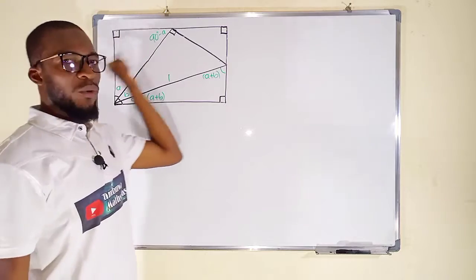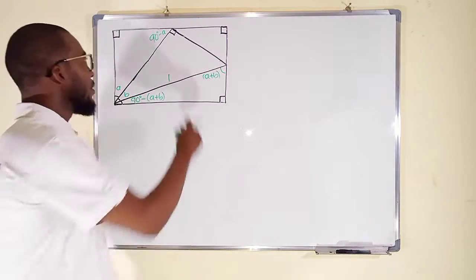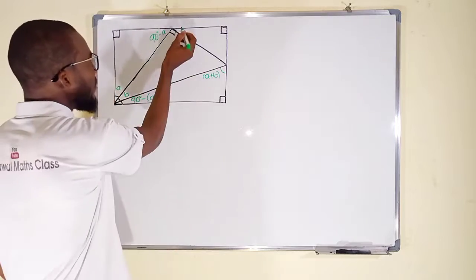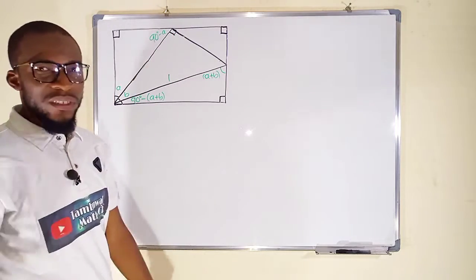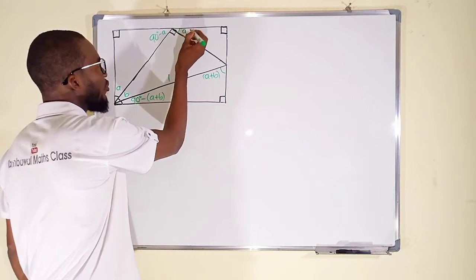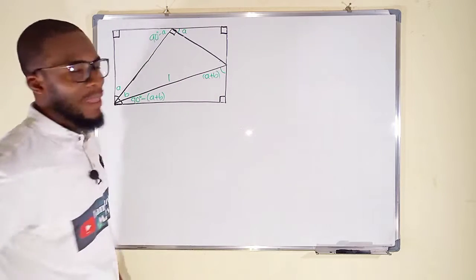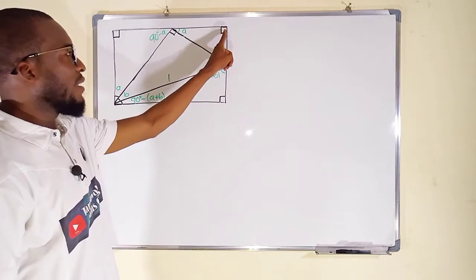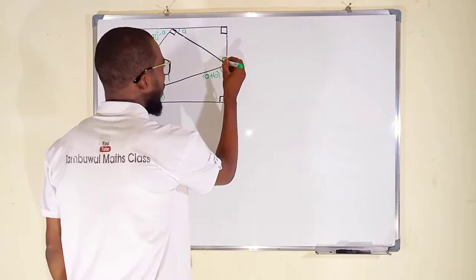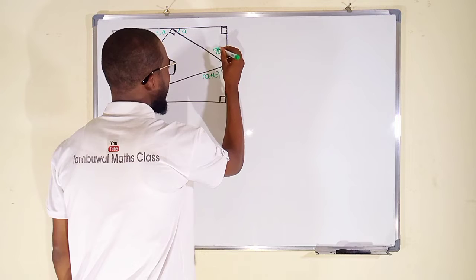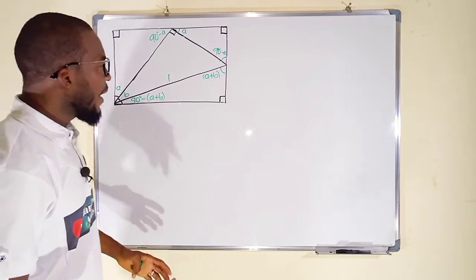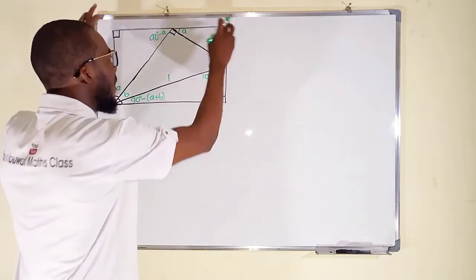This plus this will be equal to 90, so this will be 90 degrees minus A. Angle on a straight line is 180 degrees; we already have 90 here, so what is left is 90. Therefore this angle right here must be equal to A. We have another 90 here, therefore this and this must also be 90, giving us 90 minus A. Now let us go ahead and find the corresponding side lengths.